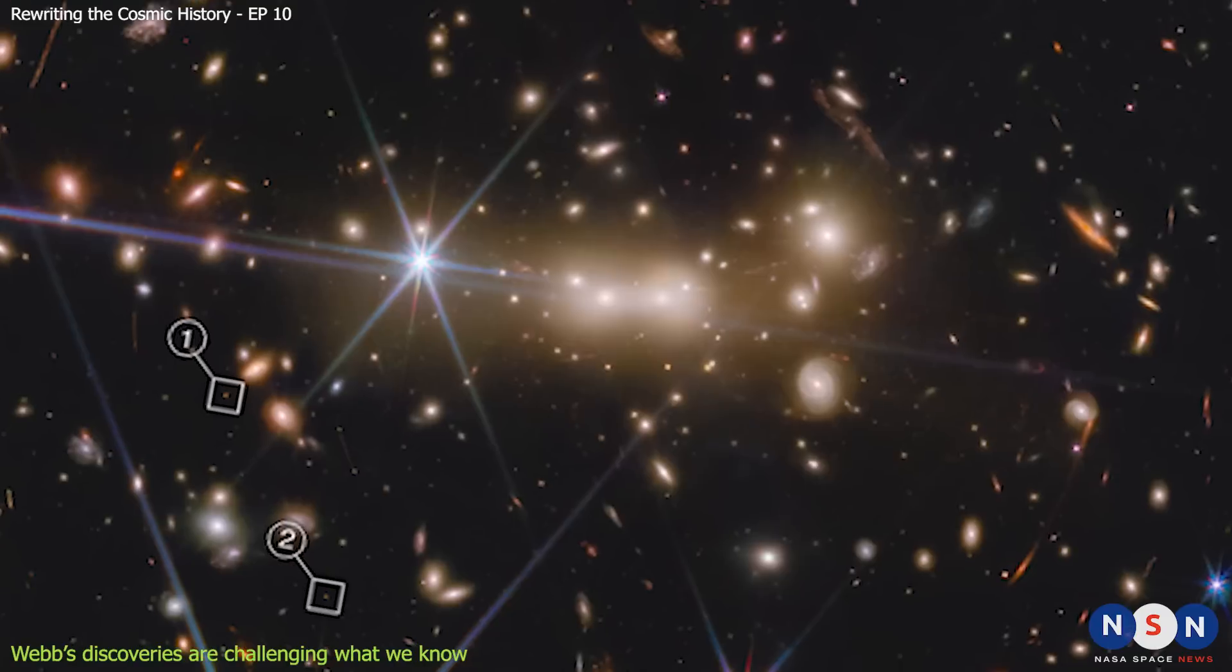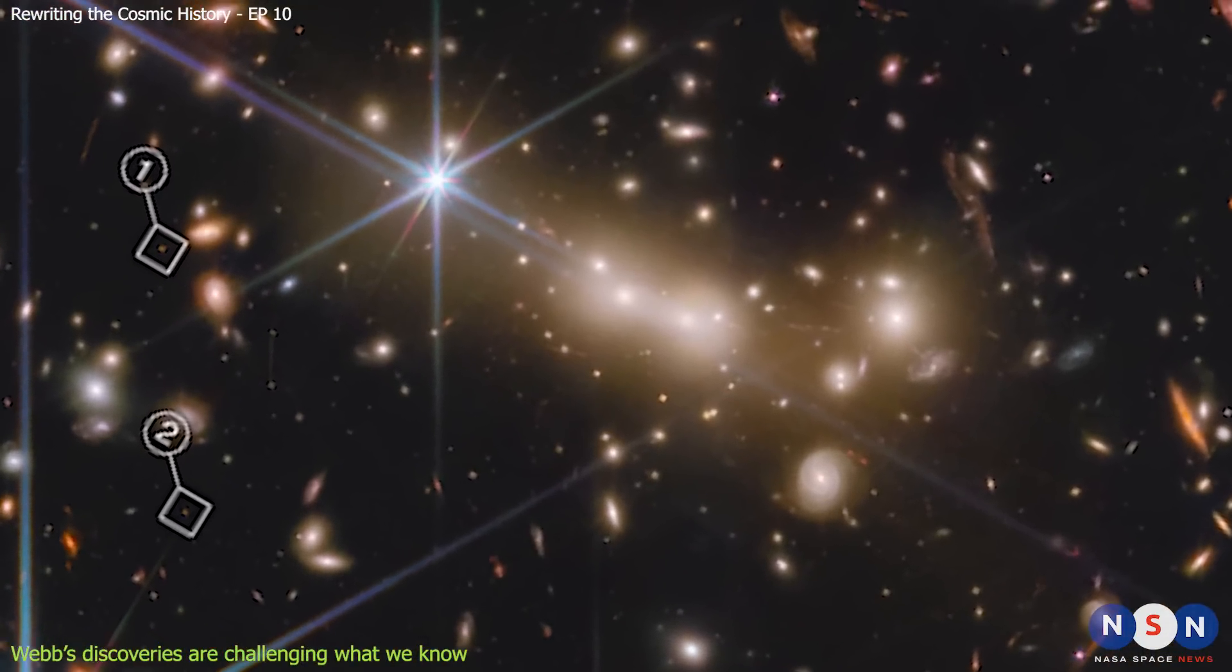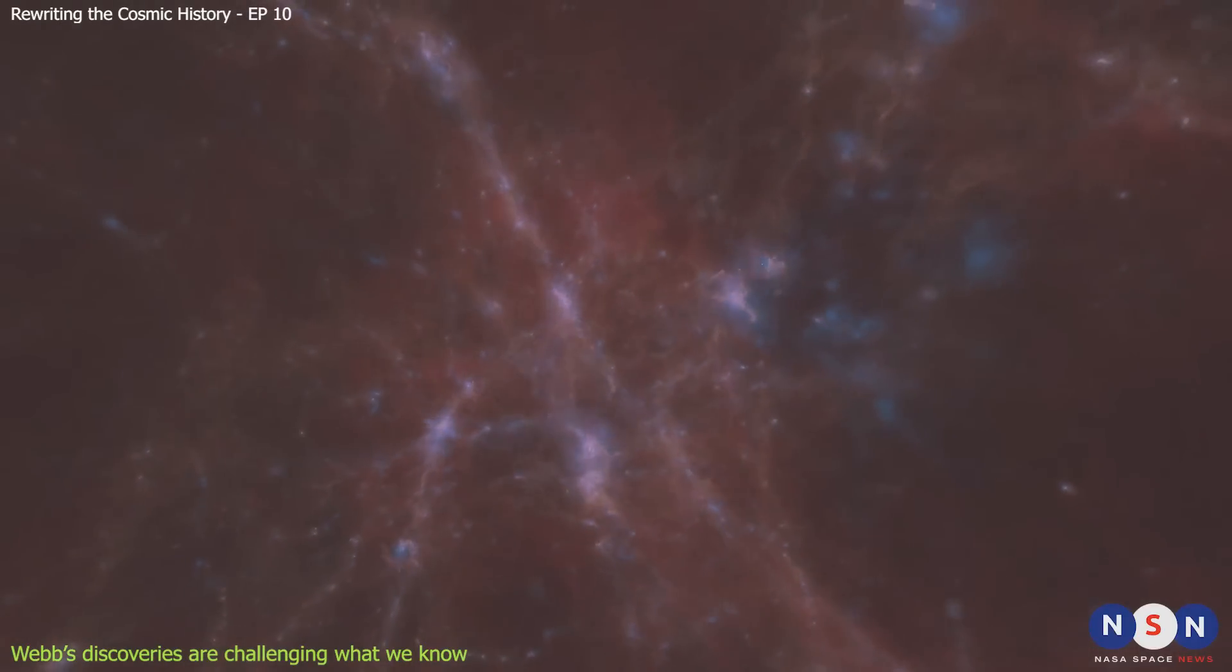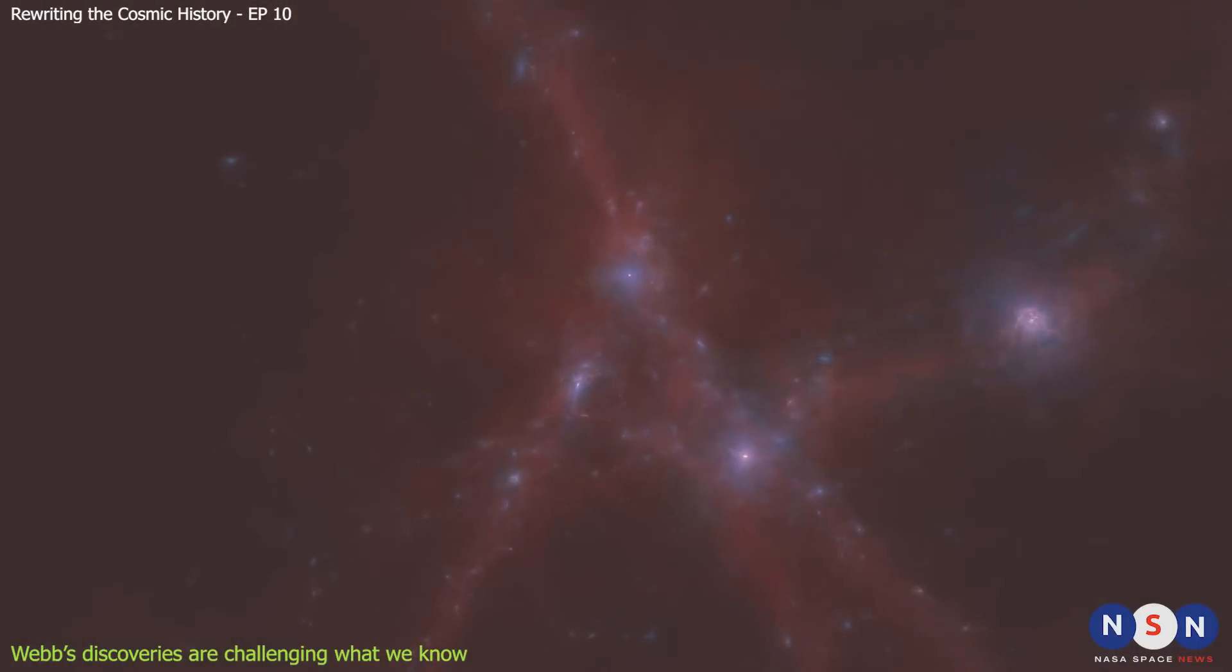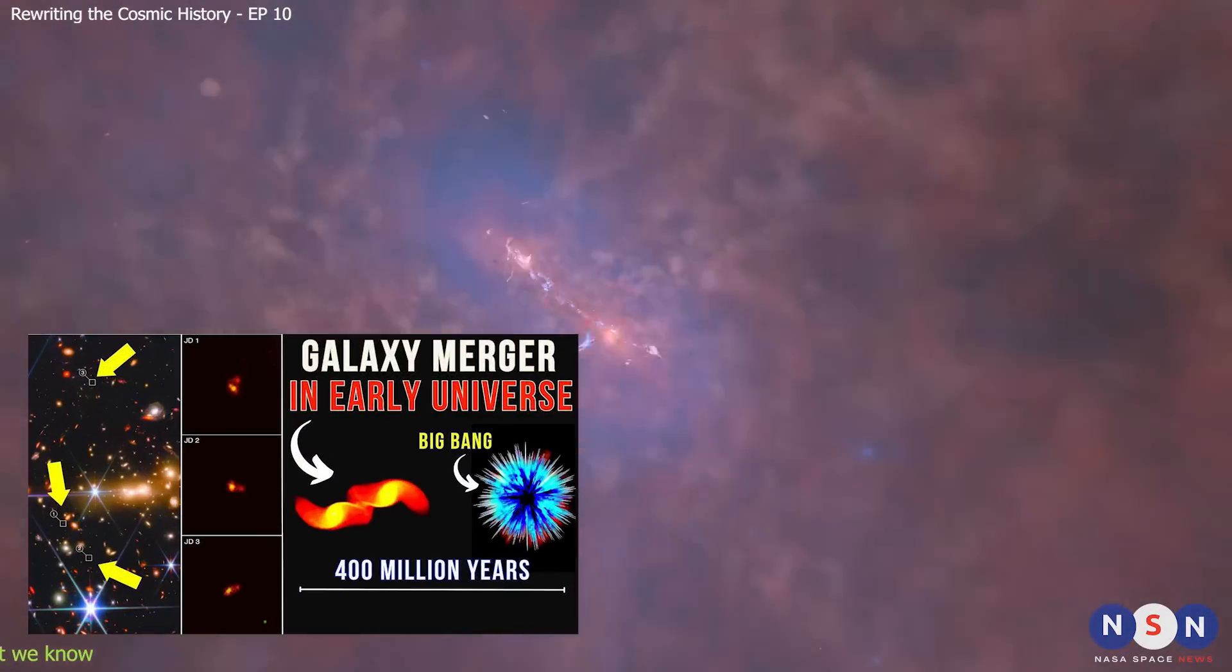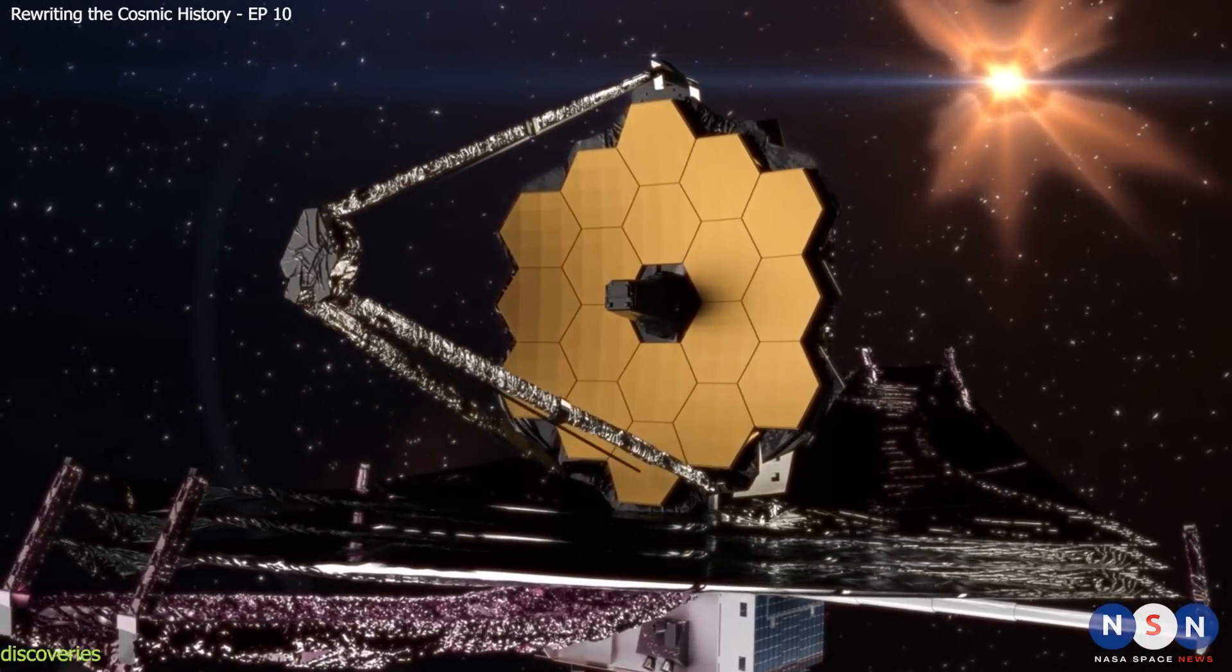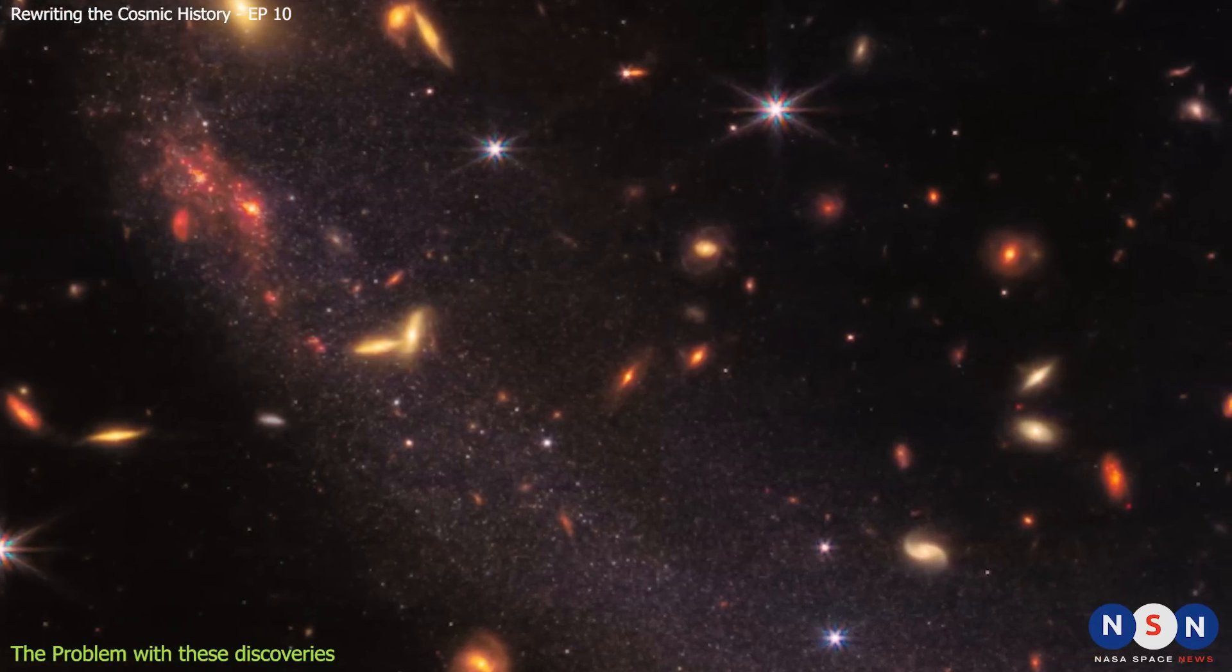This merger is also located in the same proto-cluster as the five massive galaxies we mentioned before. How did this merger happen so early and so fast, and how did it affect the formation of other galaxies in the proto-cluster? We also covered this discovery in more detail in a recent video. You can find the link in the description.